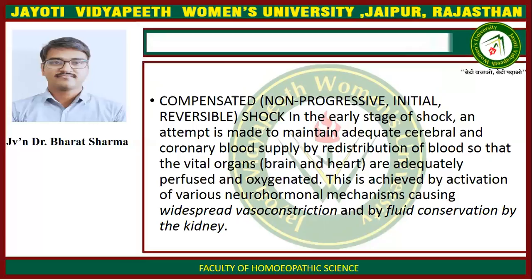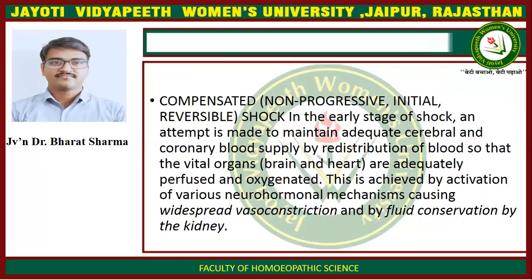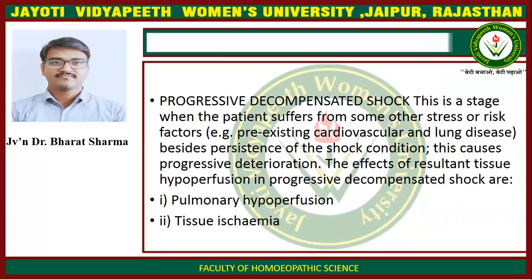In the early stage of shock, an attempt is made to maintain adequate cerebral and coronary blood supply by redistribution of blood, so that the vital organs — brain and heart — are adequately perfused and oxygenated. This is achieved by activation of various neurohormonal mechanisms causing widespread vasoconstriction, and by fluid conservation by the kidney.